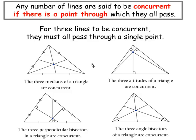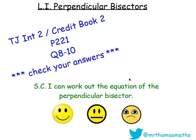And again, the same as the other videos, a number of lines are said to be concurrent if they all pass through a certain point. So perpendicular bisectors, they all go through the point, so they are all concurrent. So it's a word that you might come across when you are working through the exercise.